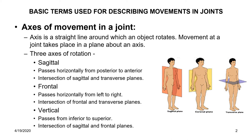The vertical axis passes from inferior to superior and is at the intersection of sagittal and frontal planes.